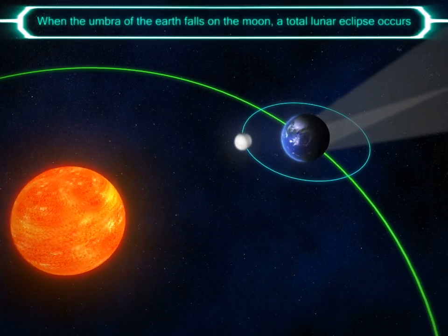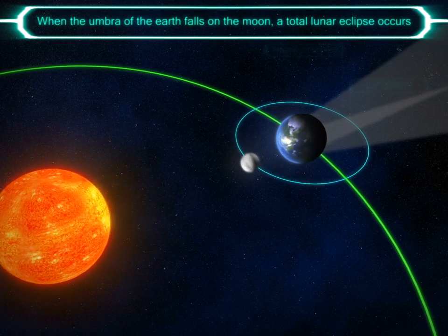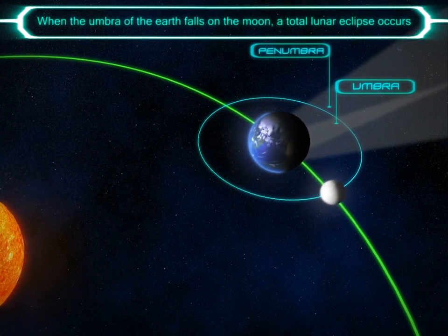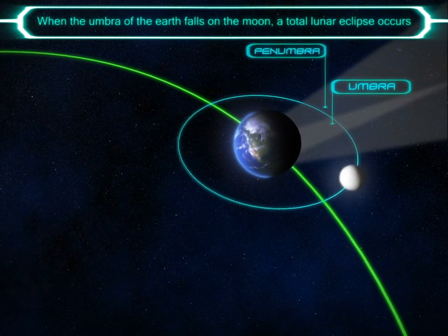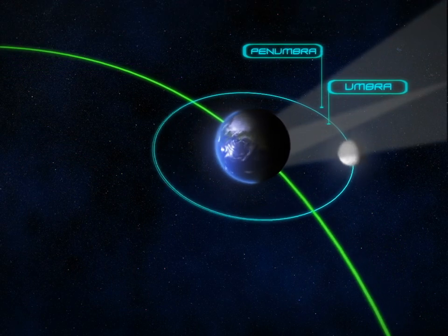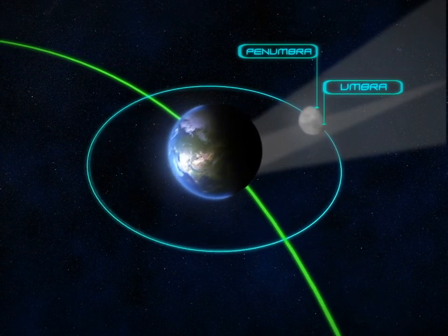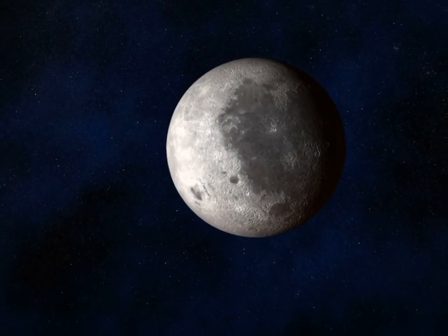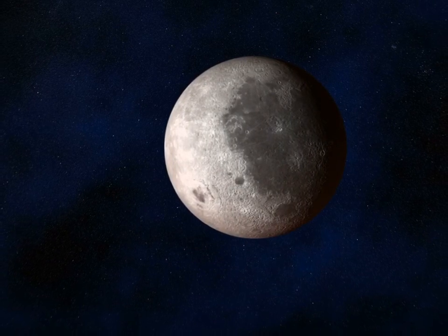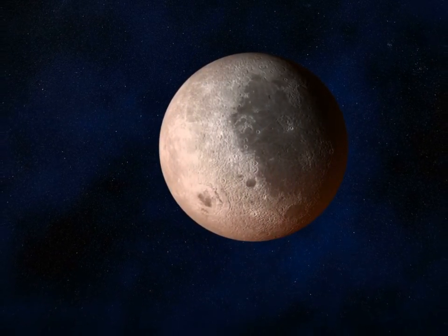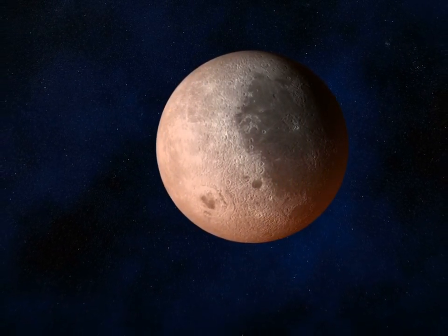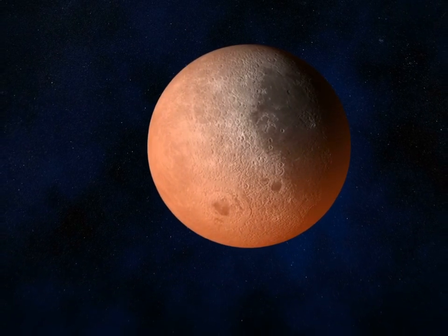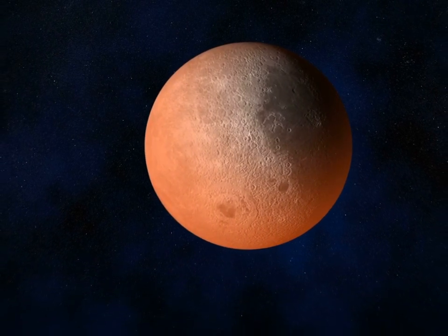When the umbra of the earth falls on the moon, a total lunar eclipse occurs. The earth blocks the sun's rays from reaching the moon, and the moon appears to be reddish in color during a total lunar eclipse.